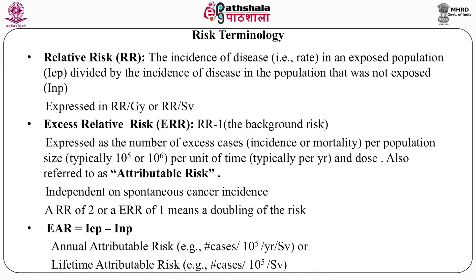A relative risk of 2, or an excess relative risk (ERR) of 1, means a doubling of the risk — double from the naturally occurring cancers. Excess attributable risk is expressed as number of cases per population (1 lakh or 10 lakh) per year per sievert. Another way of expressing risk is lifetime attributable risk: number of cases per 1 lakh of population per sievert of dose.